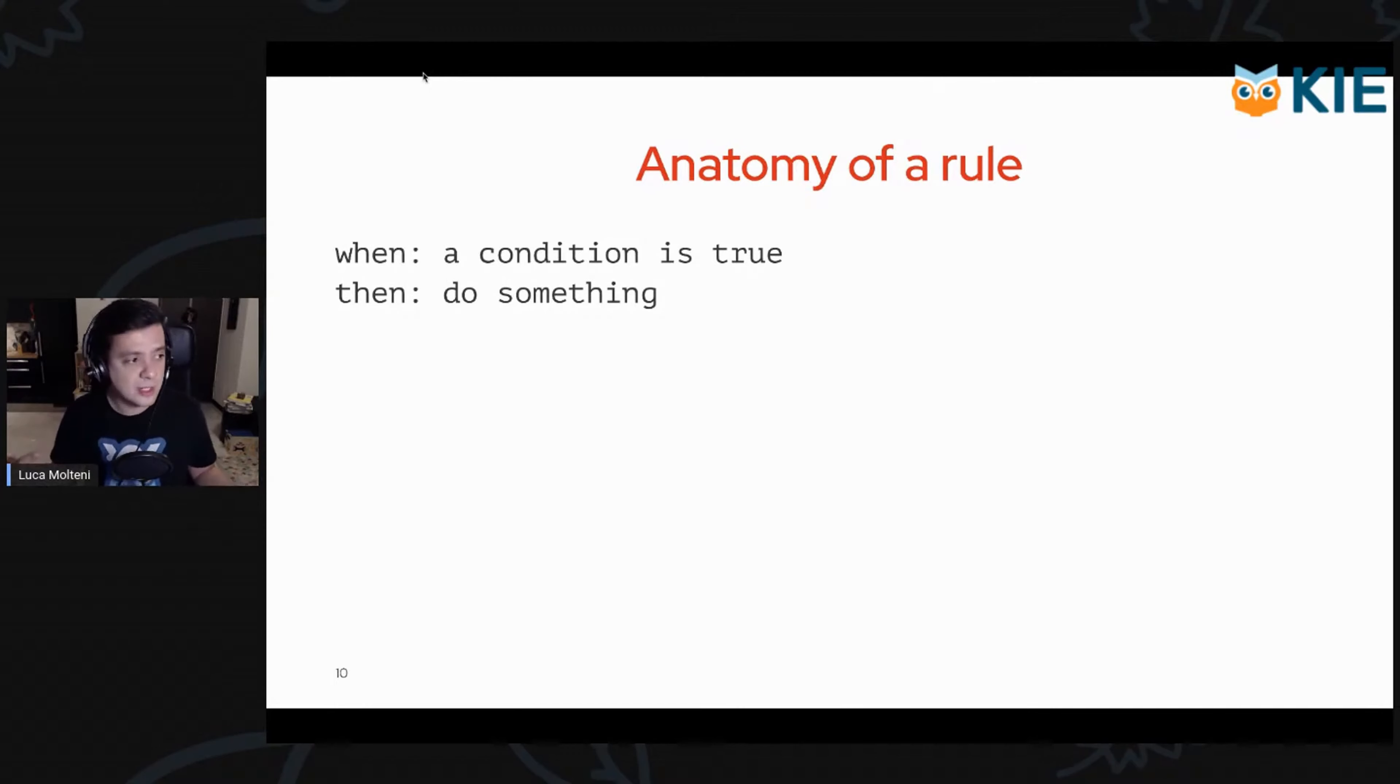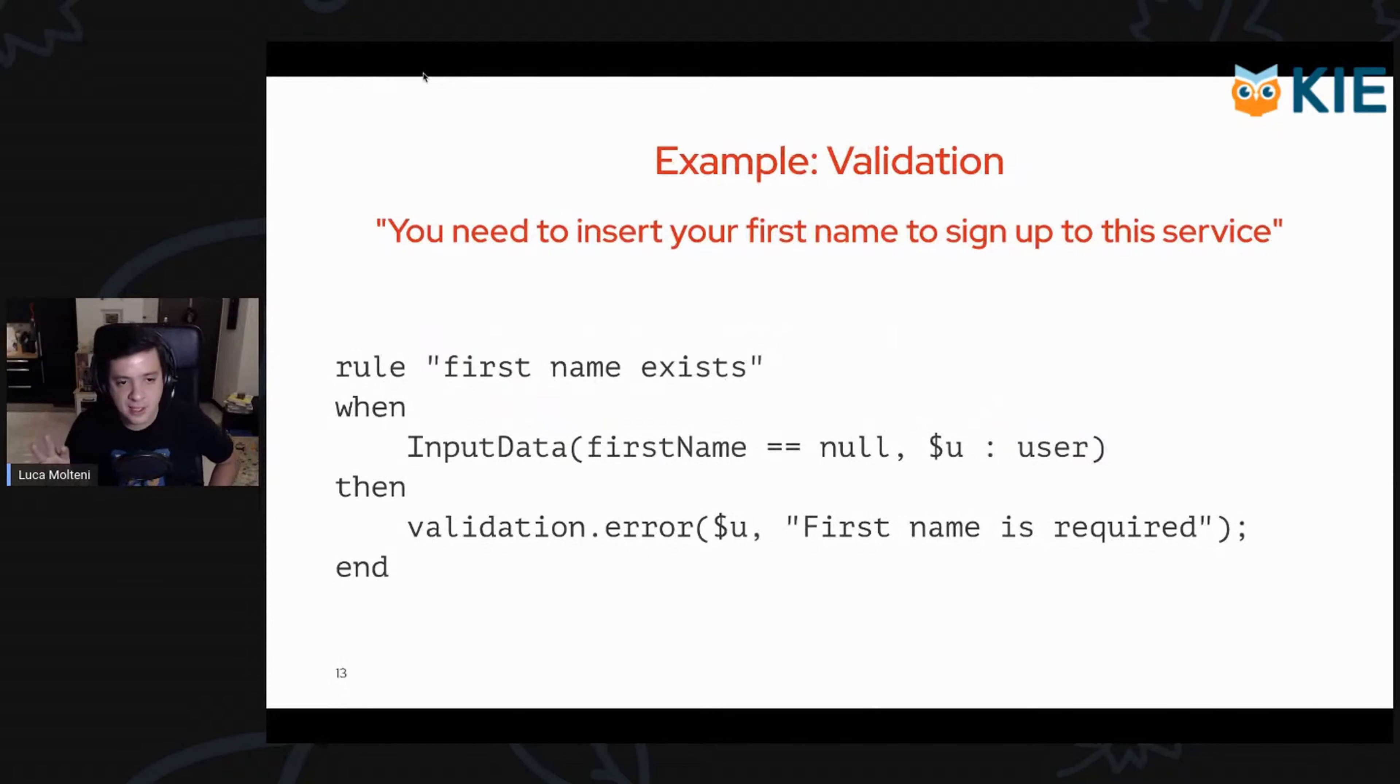Our first example of a rule written in Drools with DRL. We see that we have a rule keyword and the name of a rule, which is a string so we can write whatever we want inside. This is very simple. We have the when part with pattern matching. The pattern matching is basically just the name of a Java class. This is the first example of a pattern. You see two things here.